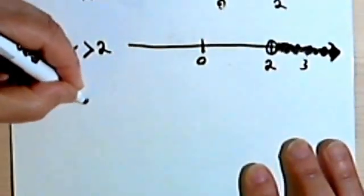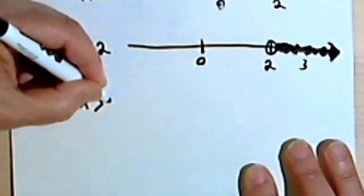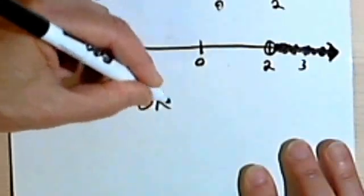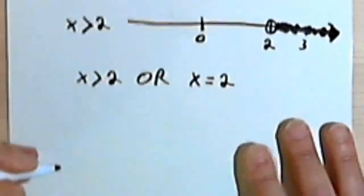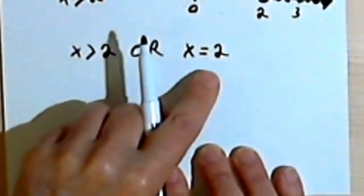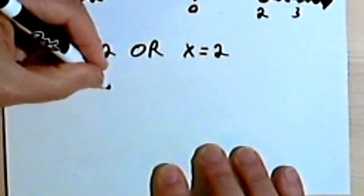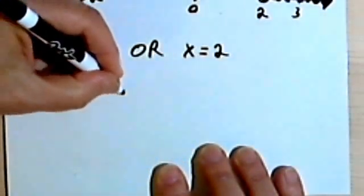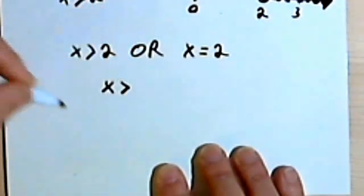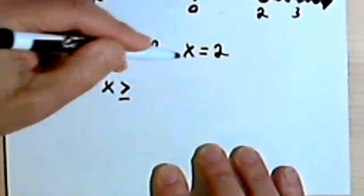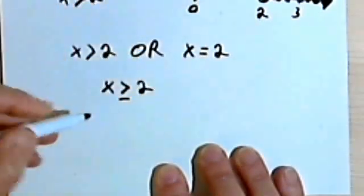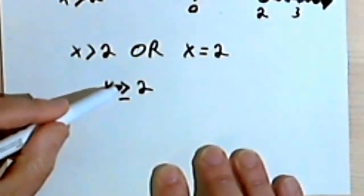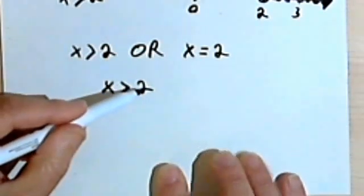Now, what if I've got a situation where x is greater than 2, or x might also equal 2? I can combine both of these symbols — the greater than symbol and the equal symbol — into one symbol. I've got the greater than sign, and I'm going to put a little line under it, as if I'm taking one of the lines from the equal sign. This reads x is greater than or equal to 2.